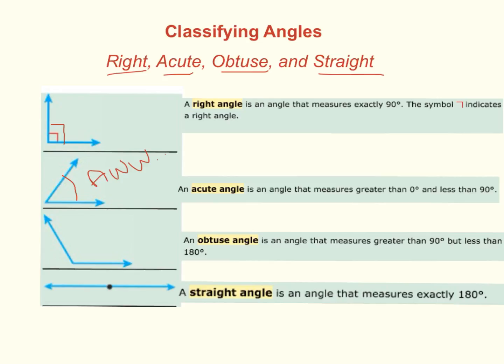Next, we have an obtuse angle. So, this is an angle that's greater than 90 degrees, but less than 180.